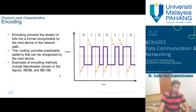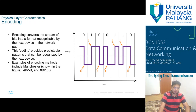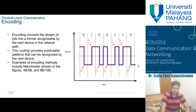What exactly is encoding? Encoding converts the stream of bits into a format recognized by the next device in the network path. It provides predictable patterns that can be recognized by the next device. For example, you convert certain words into electrical signals using binary — ones and zeros are converted into high and low voltages that are sent through the communication line from sender to receiver. At the receiver, they decode the electrical signals and reconstruct the original message.